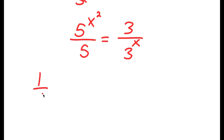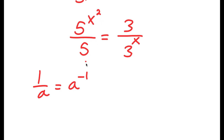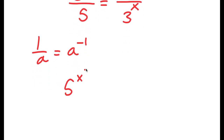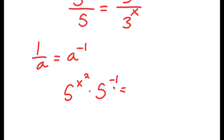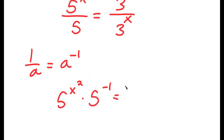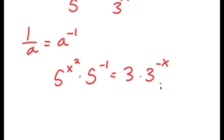Now, if I have something in the form 1 over a, this is the same thing as a to the power of negative 1. So 5 to the power of x squared over 5 is the same thing as 5 to the power of x squared times 5 to the power of negative 1, and this is equal to 3 times 3 to the power of negative x.